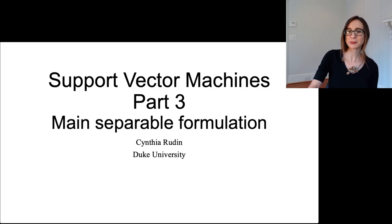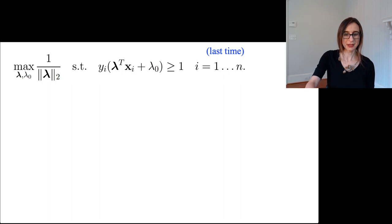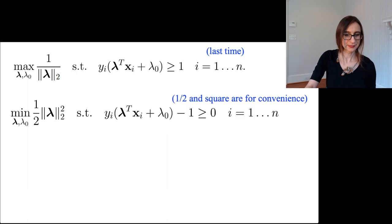Let's go over the main support vector machine formulation. From last time, we know we're going to maximize one over the norm of lambda such that all the unnormalized margins are at least one. That's the same thing as minimizing a half times the norm of lambda squared.